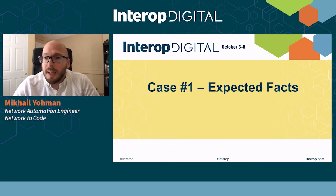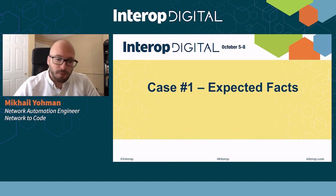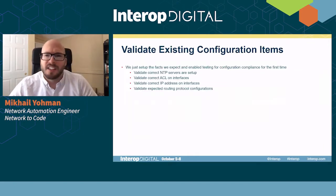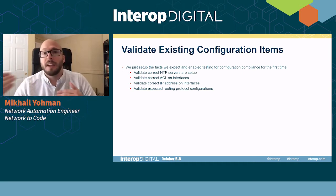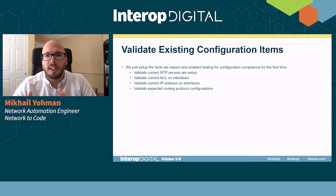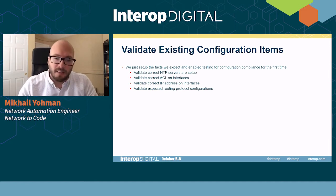For case number one, I didn't want to do these live because they take time to run. We're going to use our expected facts. This is really to show how to get started with Batfish — just do simple config compliance, extract our facts, and change them to what we expect our network to look like: NTP, ACLs on interfaces, routing protocols. I think that's a good place to get started.